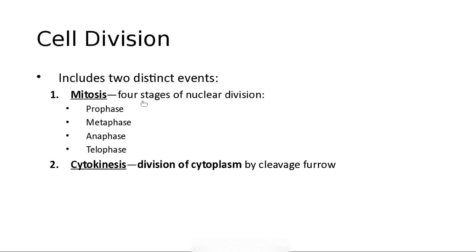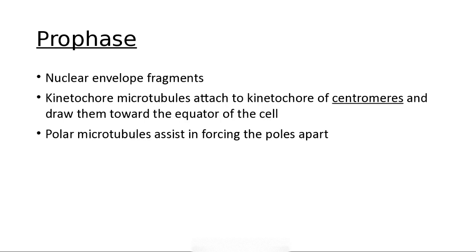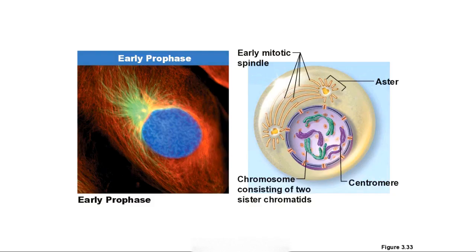Cell division has four phases: prophase, metaphase, anaphase, and telophase, then cytokinesis. In prophase, the chromosomes are starting to become visible and mitotic spindles are starting to form. The nuclear envelope fragments, so it's no longer wrapped up. We already have replicated chromosomes because that happened during interphase. The mitotic spindle will attach and separate to either side of the cell.